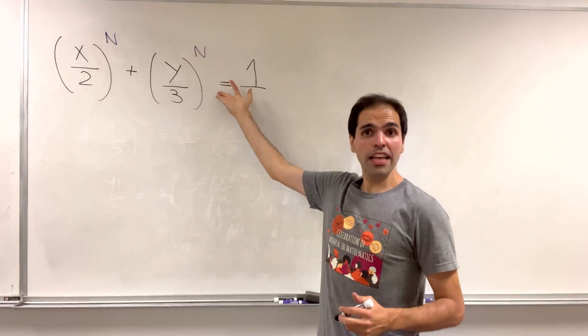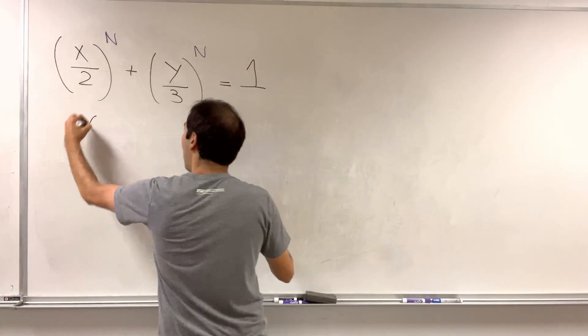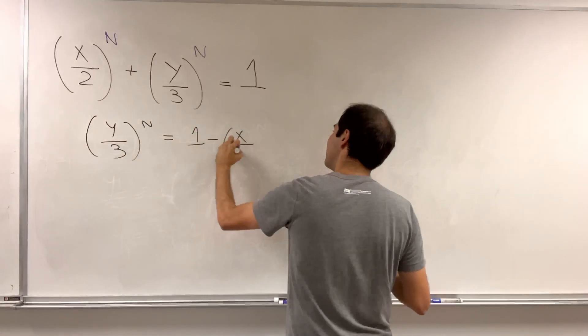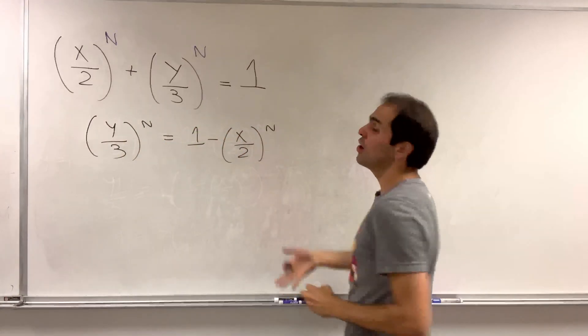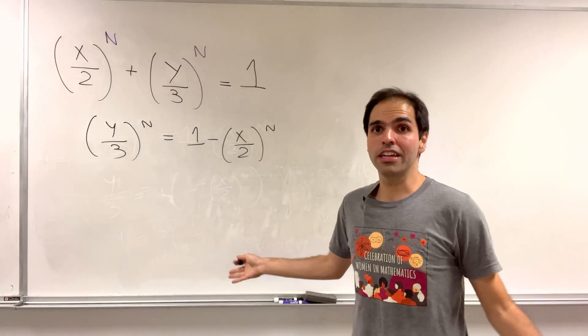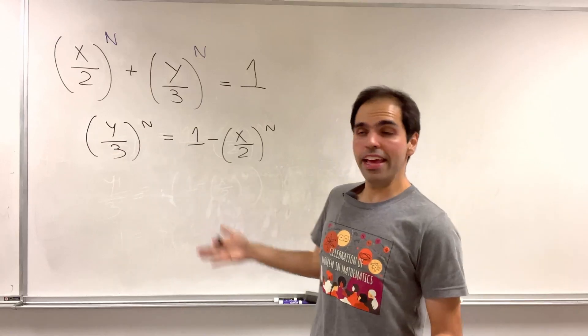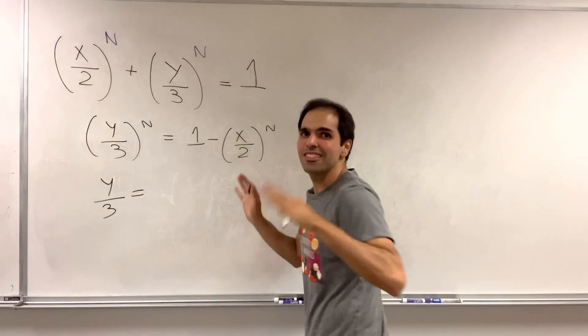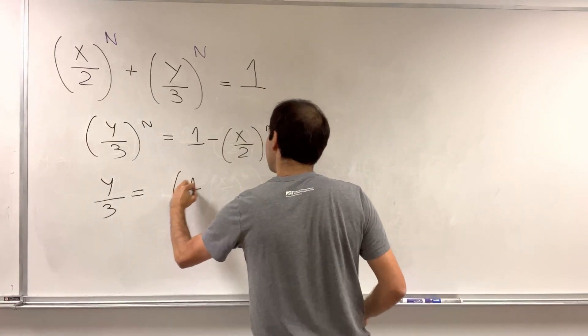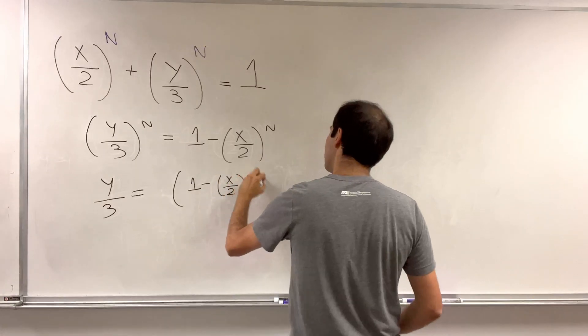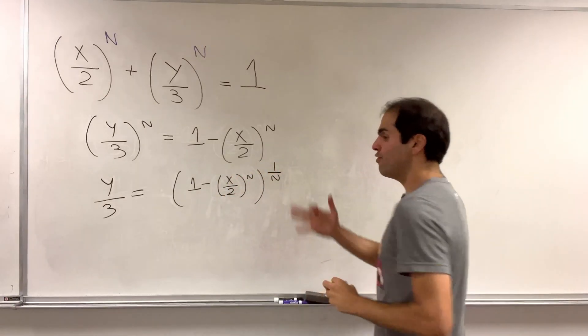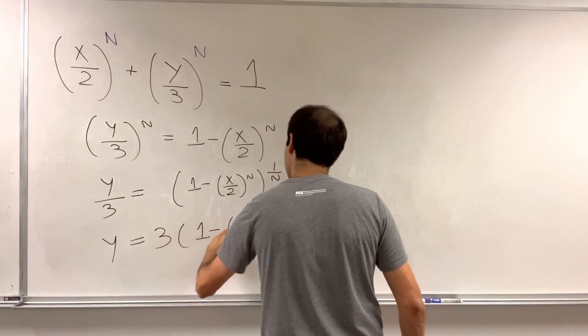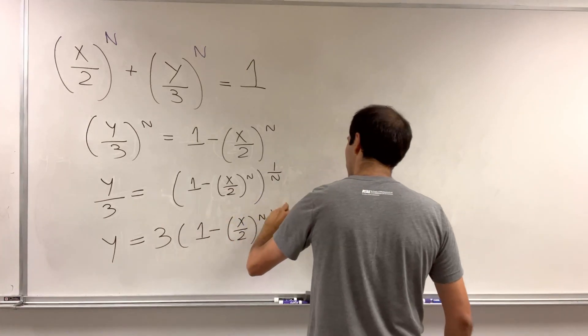For this, let's solve for y in terms of x. So y over 3 to the n is 1 minus x over 2 to the n. I know I'm supposed to put absolute values but we'll get rid of them very soon. Taking nth roots we get y over 3 equals 1 minus x over 2 to the n, nth root. Finally, y is 3 times 1 minus x over 2 to the nth root.